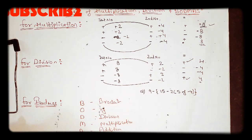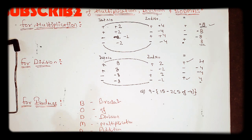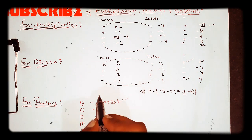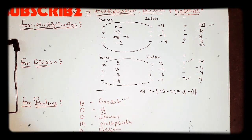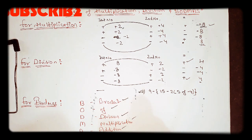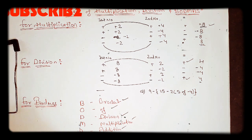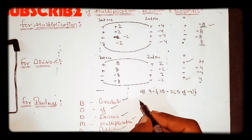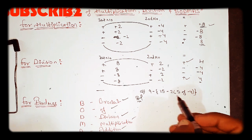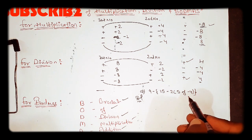Next is BODMAS. For BODMAS, you need to first open the brackets — starting with the bar-type bracket, then Off, then Division, Multiplication, Addition, and Subtraction. You go with the innermost bracket first and then proceed outward.